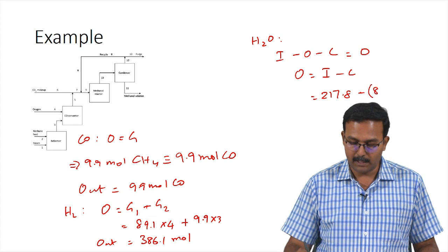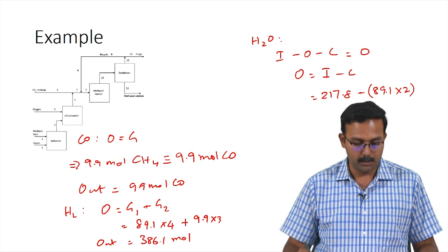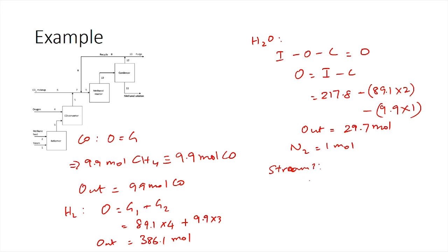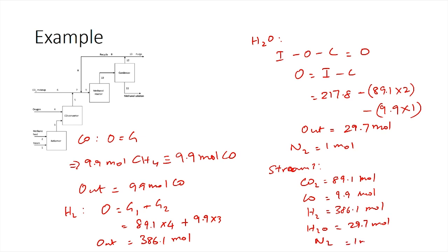Water output is 217.8 − (89.1×2) − (9.9×1) = 29.7 moles. Nitrogen does not react, so its output is 1 mole. Therefore, stream 3 composition is: CO2 = 89.1 moles, CO = 9.9 moles, H2 = 386.1 moles, H2O = 29.7 moles, and N2 = 1 mole.